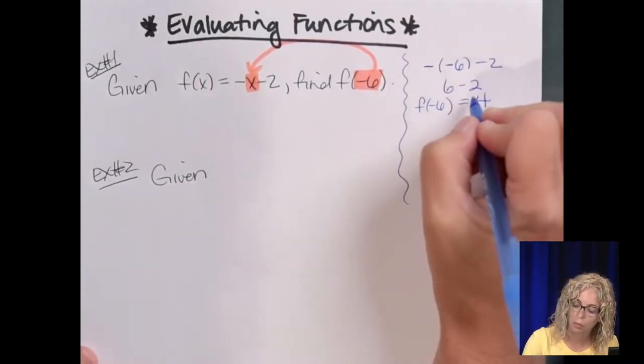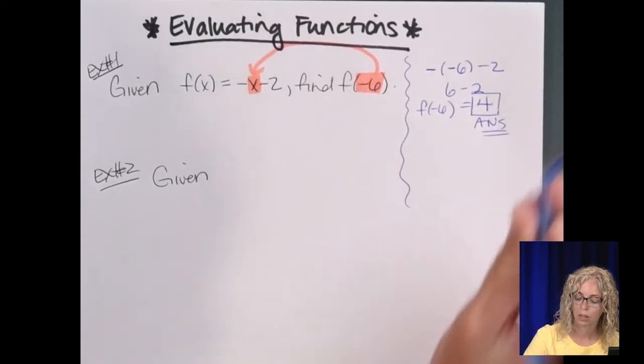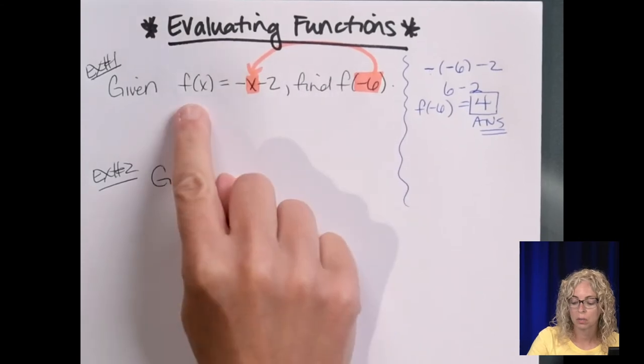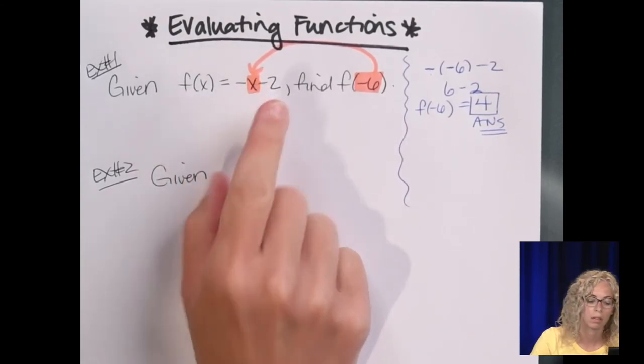So we can say that f of negative six equals four. Okay, but you would just type four in as your answer. Okay, and it's a linear function because it's just simply x to the first power mx plus b.